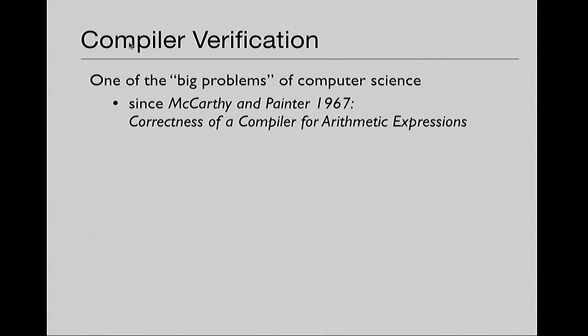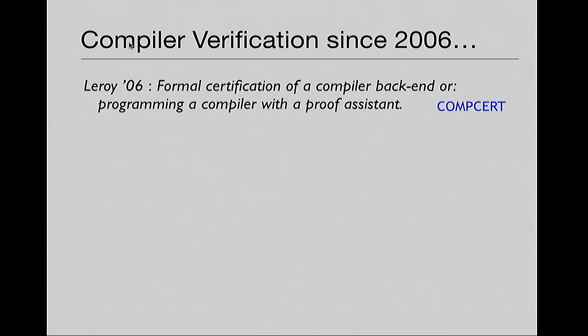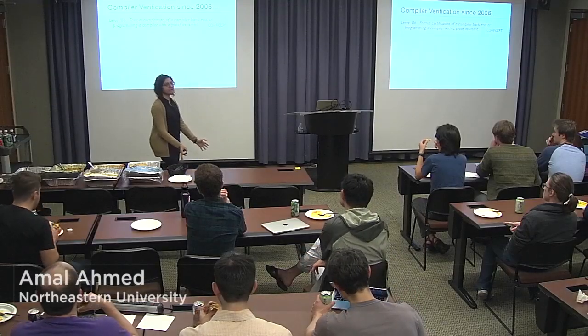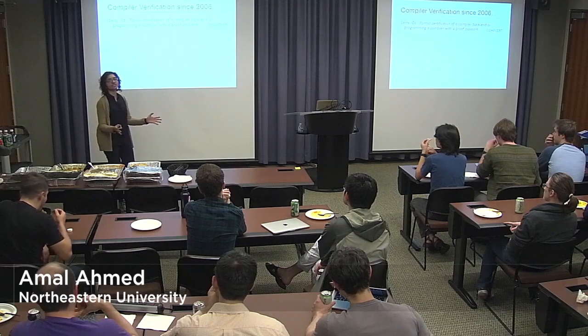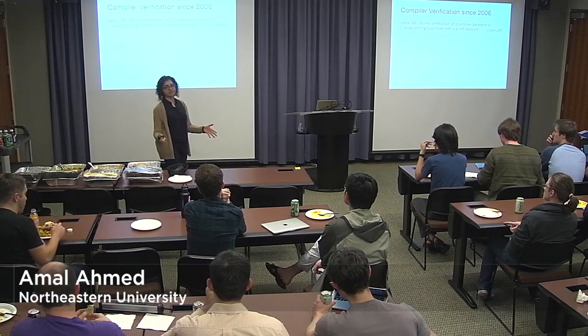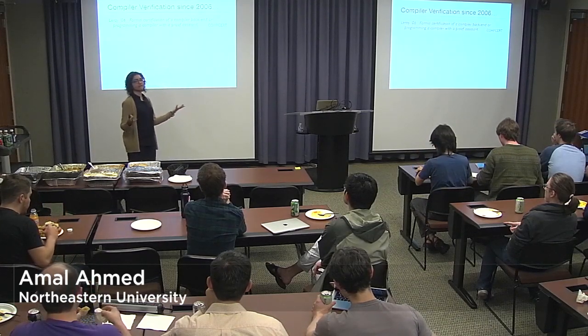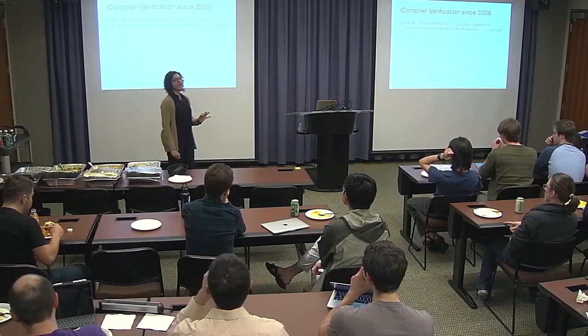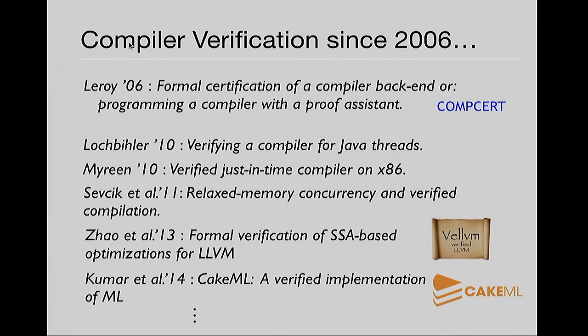The big renaissance in compiler verification started in 2006 with Xavier Leroy's paper on CompCert. This was the first piece of work that showed us how to take a compiler for a realistic language and do a proof of compiler correctness in a completely machine-checked way, and also get an implementation of the compiler out — verifying a compiler using a proof assistant. The amazing thing about CompCert was that it provided a proof architecture for people to follow, and that led to a lot of work that came after.